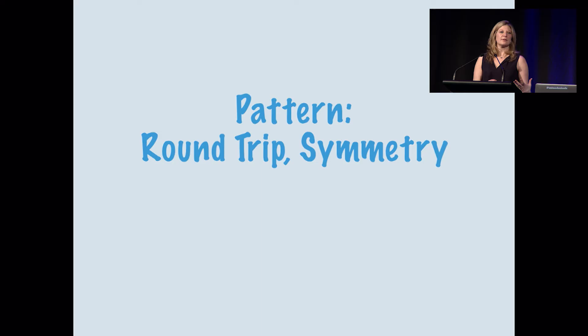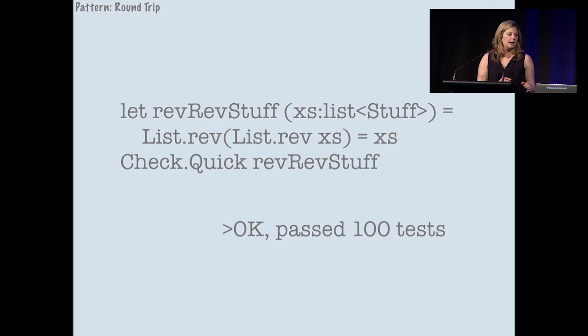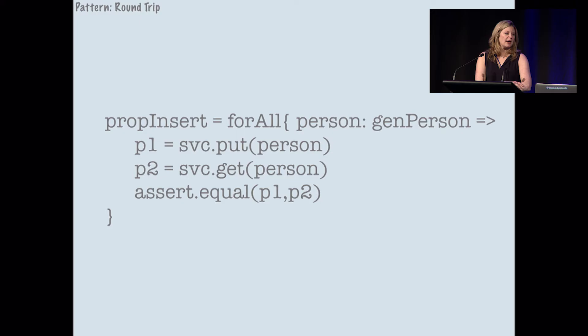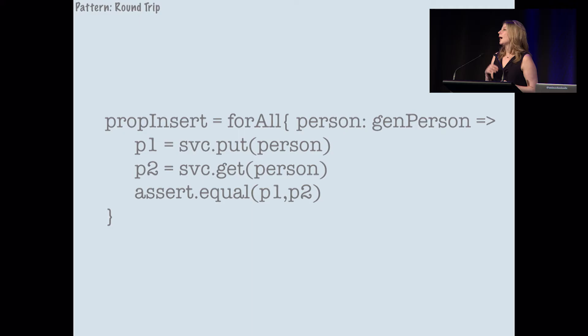Our next pattern is round trip or symmetry — we've already kind of talked about this with JSON encode and decode. Here we've got a list of stuff: when we reverse and then reverse the reversal, we should have the same thing back at the beginning. What's interesting is that sometimes I end up writing functions to undo the thing I did, even if my system doesn't need it, just so I can test that my understanding and the system's implementation are the same. And for inserting properties: if I've got a database, I can put something in and test that I'm going to get the same thing back when I call it.